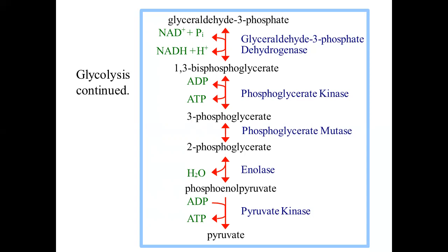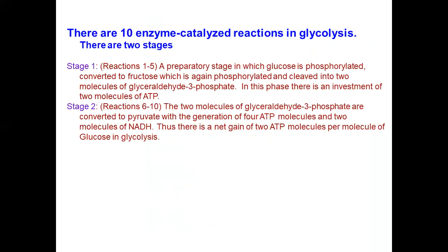The enzyme involved was phosphoglycerate mutase. Then 2-phosphoglycerate loses one water molecule to form phosphoenol pyruvate, and the enzyme involved was enolase. Then phosphoenol pyruvate loses the remaining phosphate for the formation of another ATP molecule by the enzyme pyruvate kinase, forming pyruvate. So there are ten enzyme-catalyzed reactions in glycolysis in two stages: the preparatory stage, in which glucose is phosphorylated, converted to fructose, again phosphorylated, and cleaved into two molecules of glyceraldehyde-3-phosphate, with an investment of two ATP molecules.